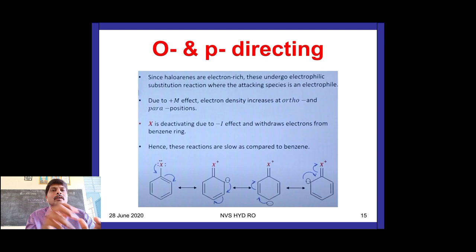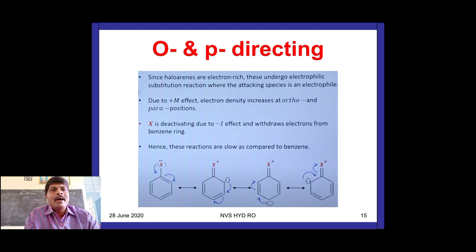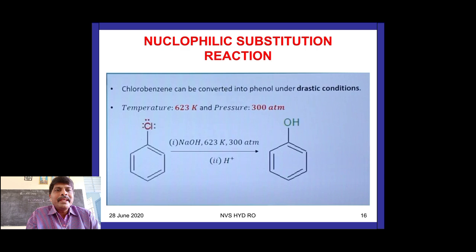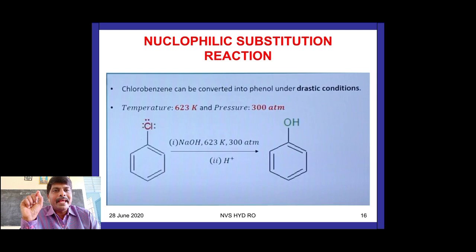Chlorobenzene is an ortho and para directing group. Now for nucleophilic substitution reactions: chlorobenzene can be converted into phenol under drastic conditions — treat chlorobenzene with NaOH at 623 K and 300 atmospheres pressure. Under these drastic conditions the Cl⁻ is replaced by OH⁻.